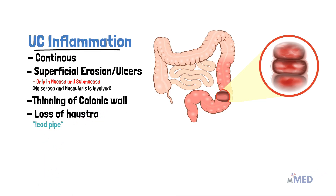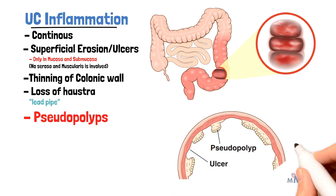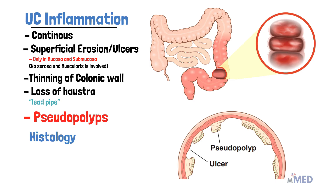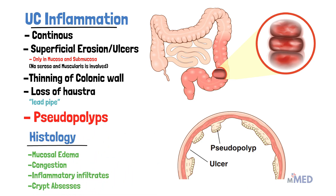Loss of haustra gives a lead pipe appearance on contrast enema imaging. The involved colonic mucosa can show extensive broad-based ulcers affecting the colon and rectum so severely that normal parts appear abnormal. These isolated islands of regenerative mucosa surrounded by inflamed colon appear raised, giving a so-called pseudopolyp appearance. On histology we can see mucosal edema, congestion, inflammatory infiltrates, and crypt abscesses.